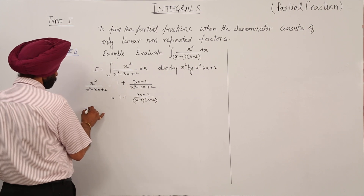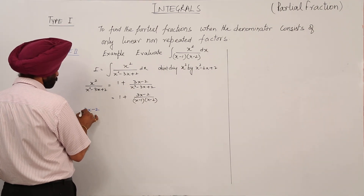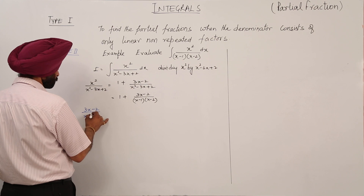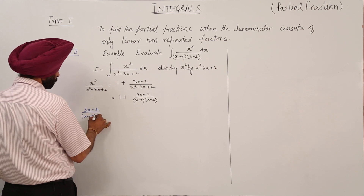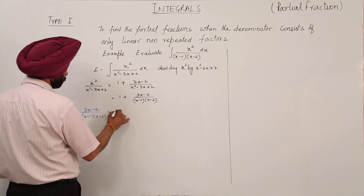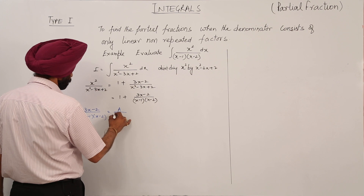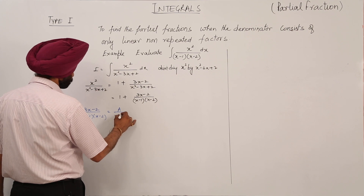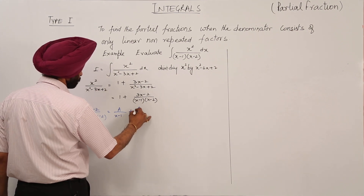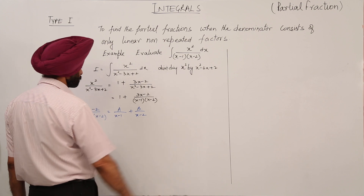Now (3x - 2) divided by (x - 1)(x - 2) will be written using partial fractions as A upon (x - 1) plus B upon (x - 2).